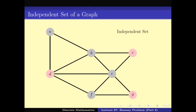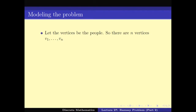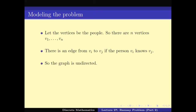Using these two notions we can now visualize the Ramsey problem. We create a graph: let the people be n vertices V1 to Vn. We draw an edge between vertex Vi and Vj if person Vi knows person Vj. Since 'Vi knows Vj' implies 'Vj knows Vi', the graph is undirected because the relationship is symmetric.